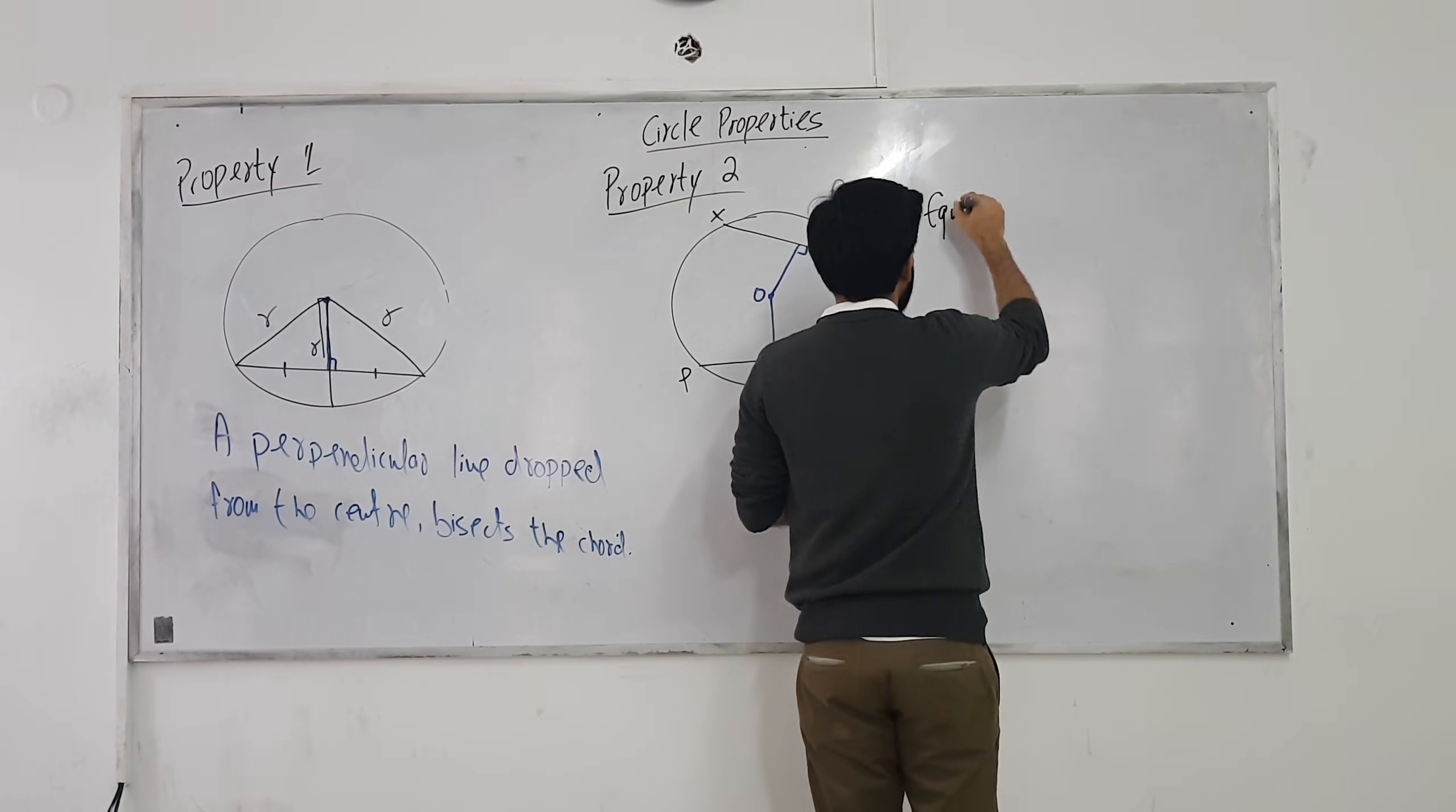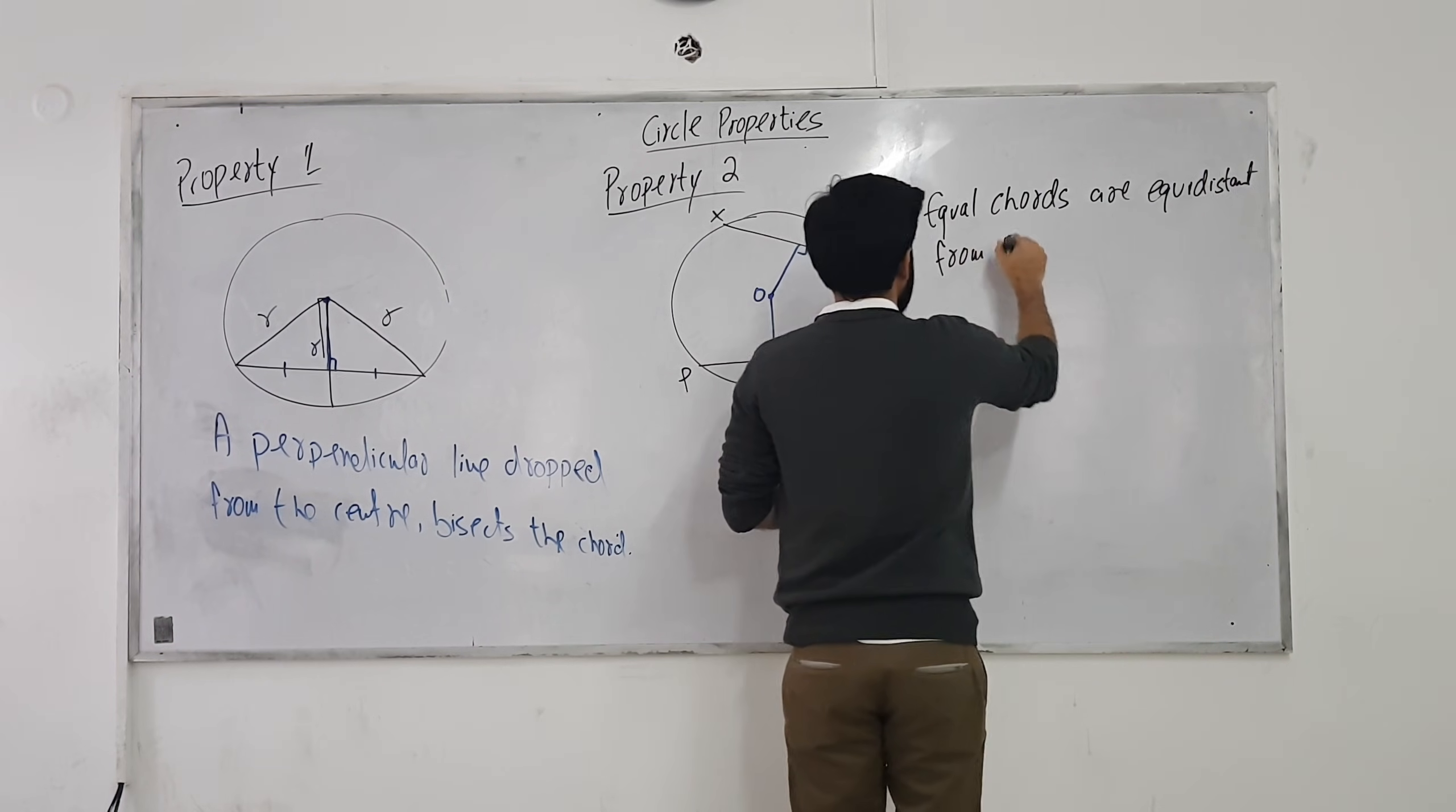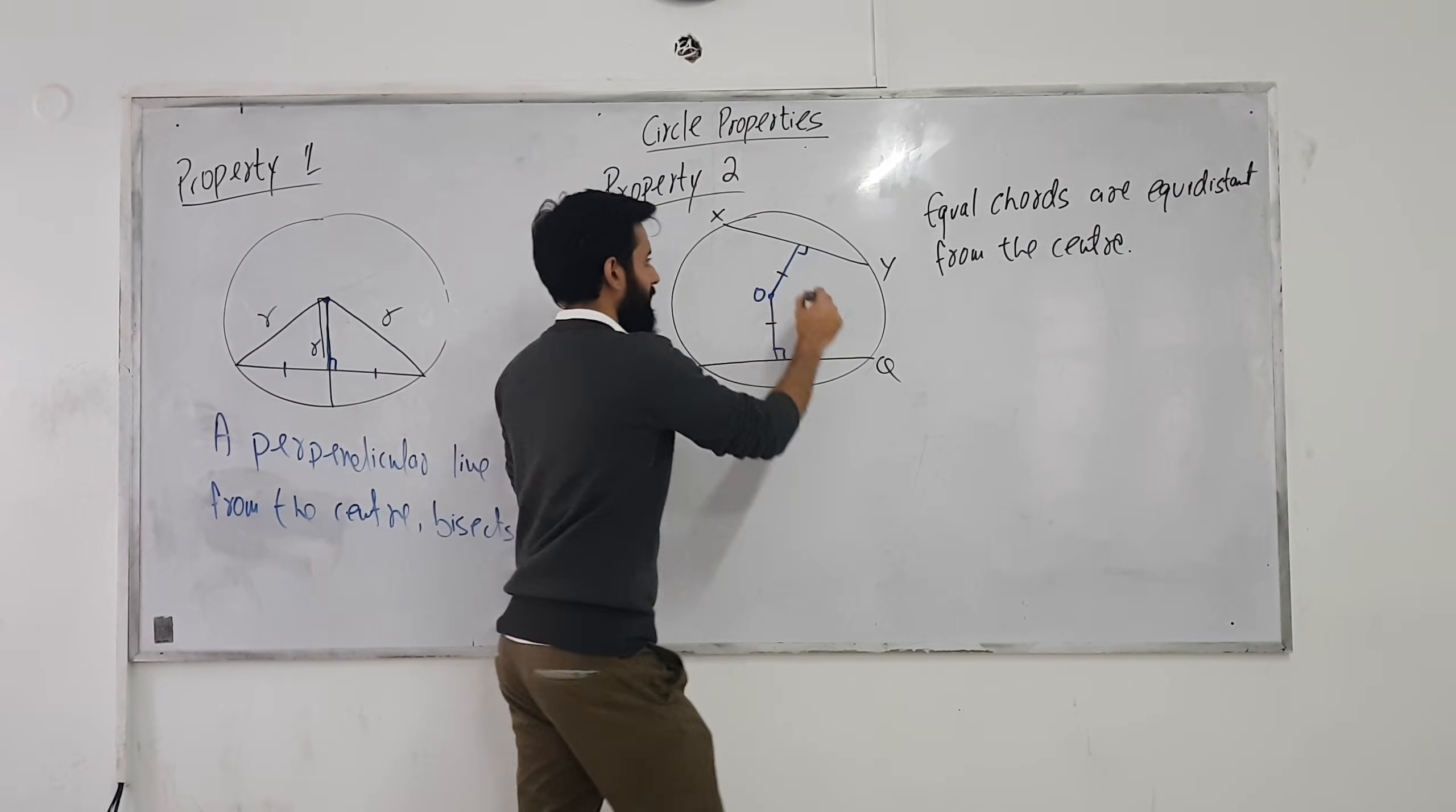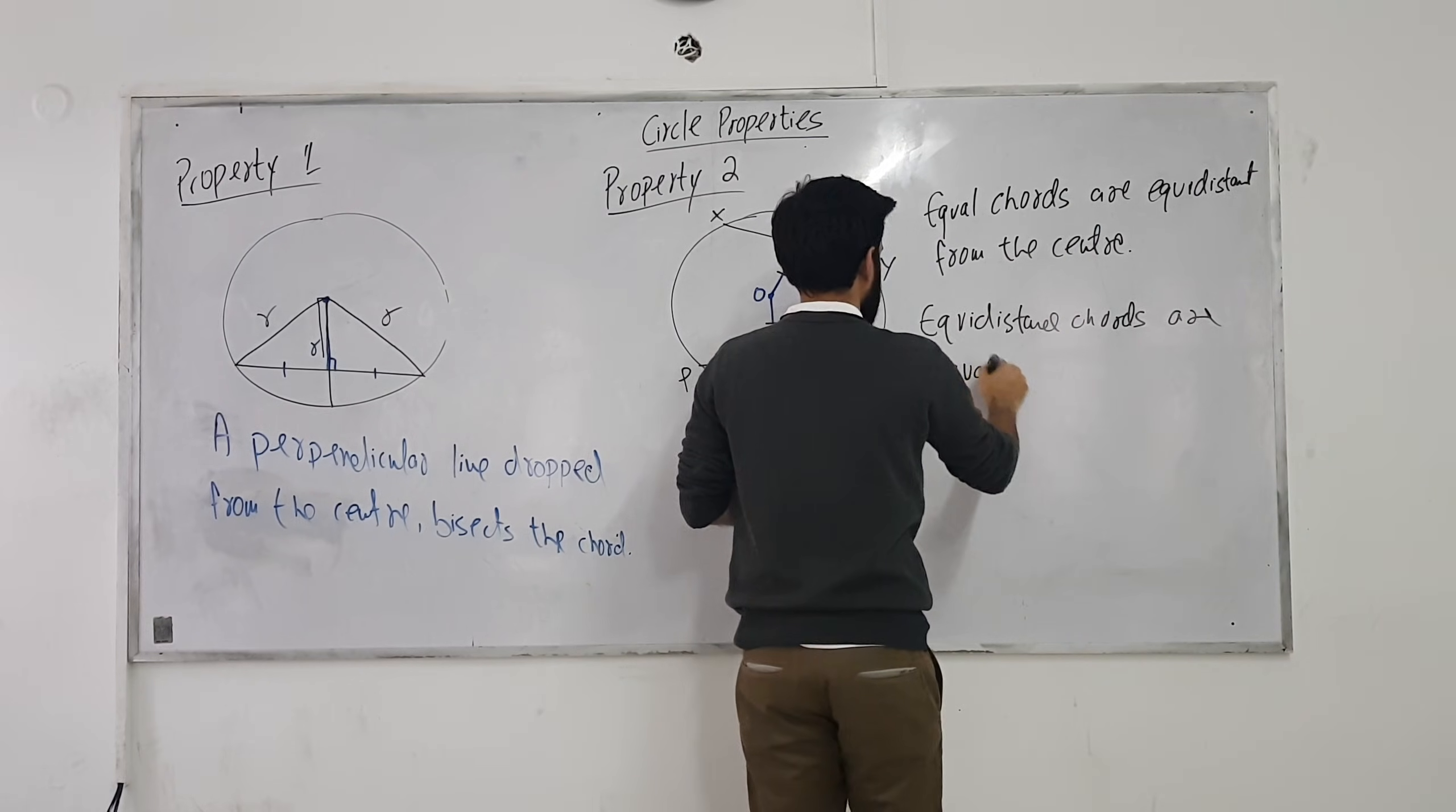So in short, equal chords are equidistant from the center. What's another way to look at it? This is one way to look at it. If it is equal in length, then it will be equal from the center. And the other way to look at it would be that equidistant chords are equal in length. By equal, you mean that their length is equal.